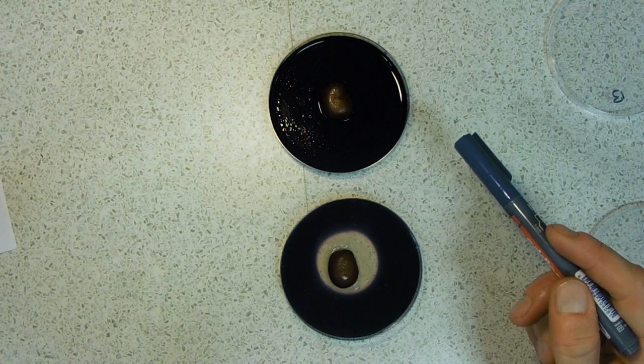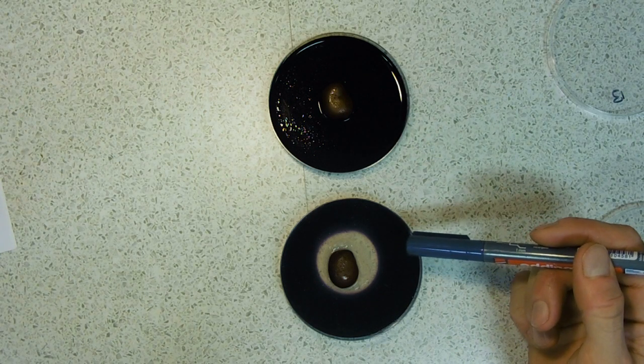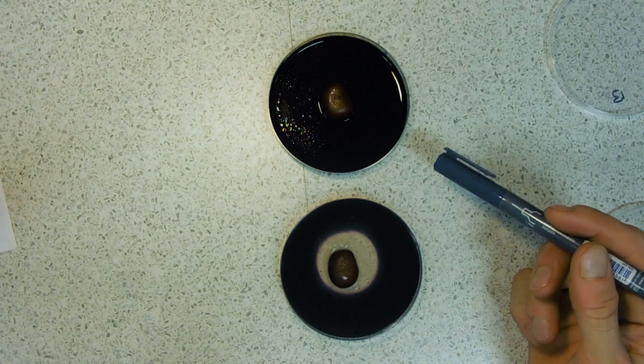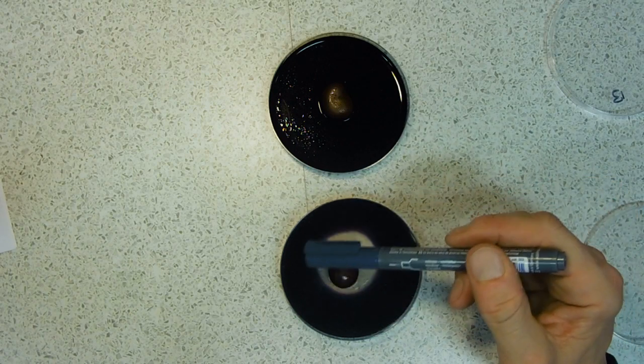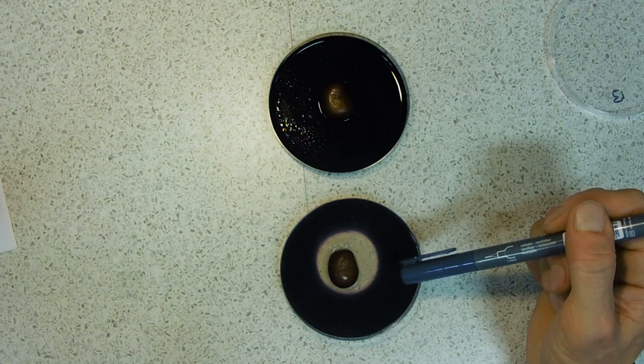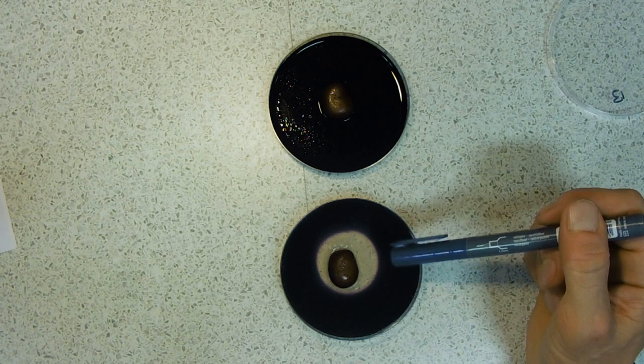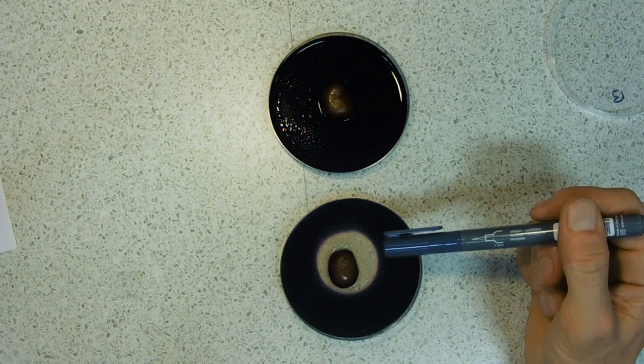A recap of the food test for starch: add iodine. The positive result is a blue-black precipitate. Where we have this blue-black color, that means there is still starch present in the agar. Where it's gone clear, that means the starch has been broken down.